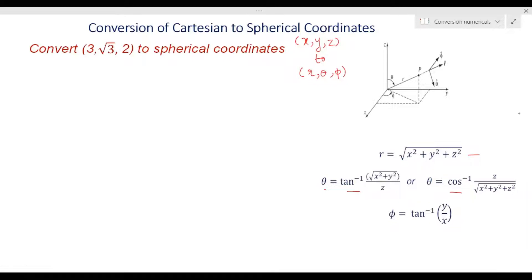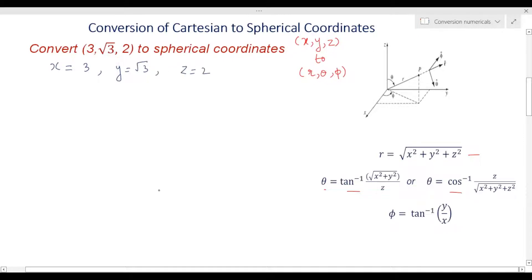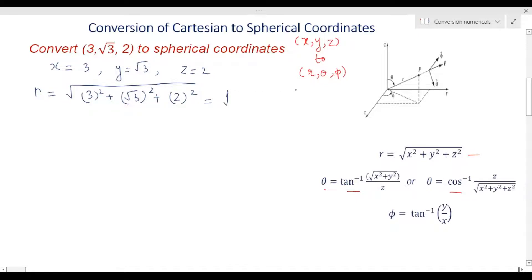First, we identify x = 3, y = √3, and z = 2. Now we find r using the transformation equation: r = √(x² + y² + z²). Substituting: x² = 3² = 9, y² = (√3)² = 3, z² = 2² = 4. This gives us 9 + 3 + 4 = 16, so r = √16 = 4. Therefore, the first coordinate is r = 4.